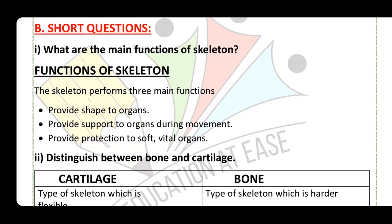Moving to short questions. Question number one: what are the main functions of the skeleton? The skeleton performs three main functions: provide shape to organs, provide support to organs during movement, and provide protection to soft vital organs.